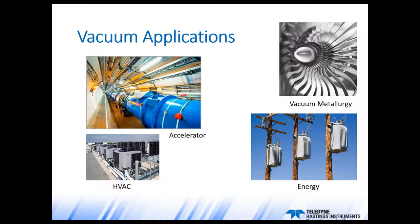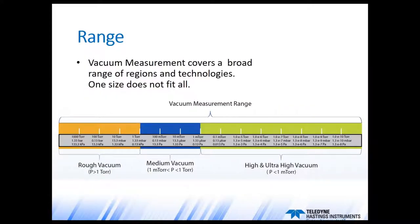Now let's get on to number one on our list — range. All of these different applications cover a very broad range of pressures. Surface analysis systems and particle accelerators can reach below 1×10⁻¹⁰ Torr, and there are some vacuum drying applications that may only require 100 Torr. Vacuum measurement covers a broad range of regions and technologies, and there's not one single technique that's going to cover them all. There are combination gauges that combine techniques to cover a broader range.